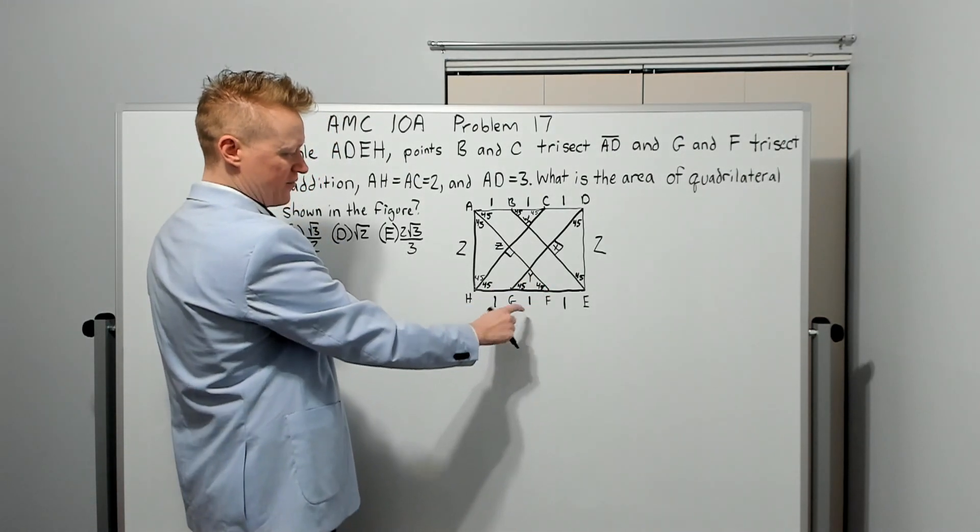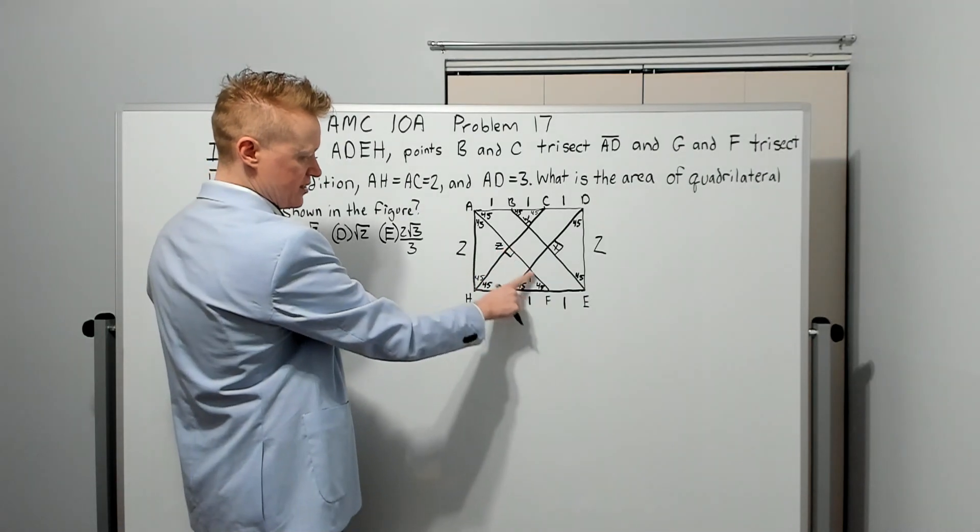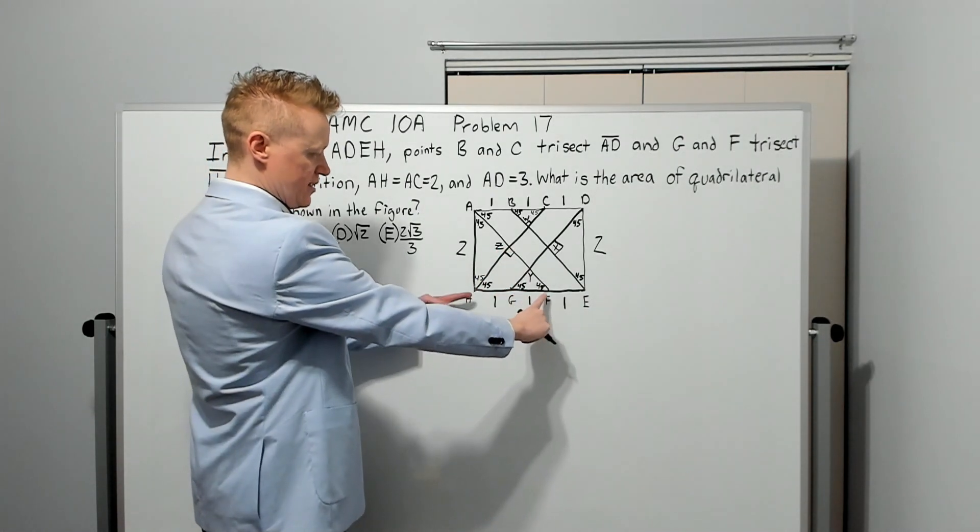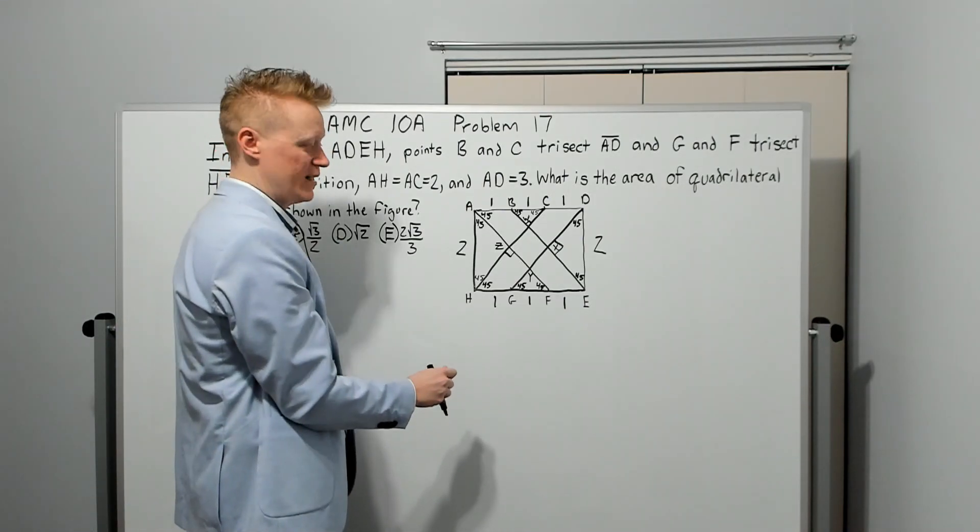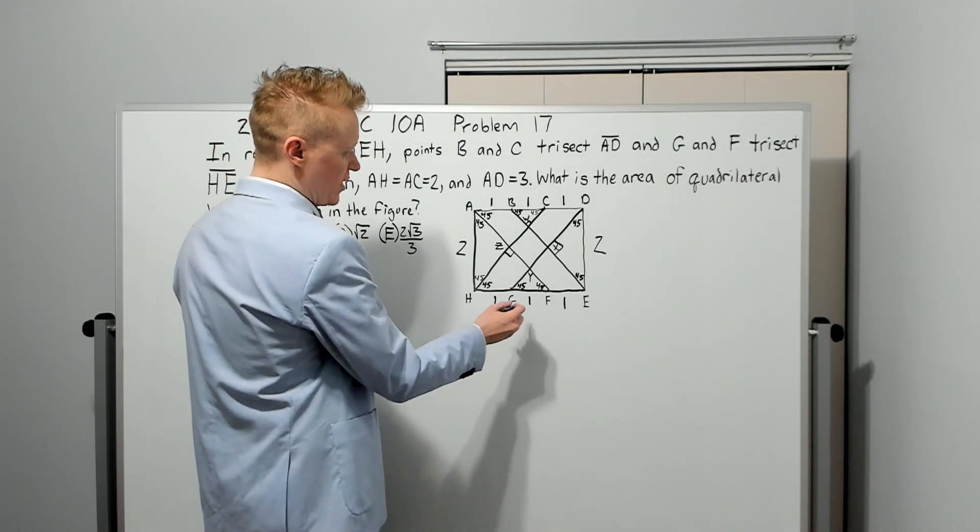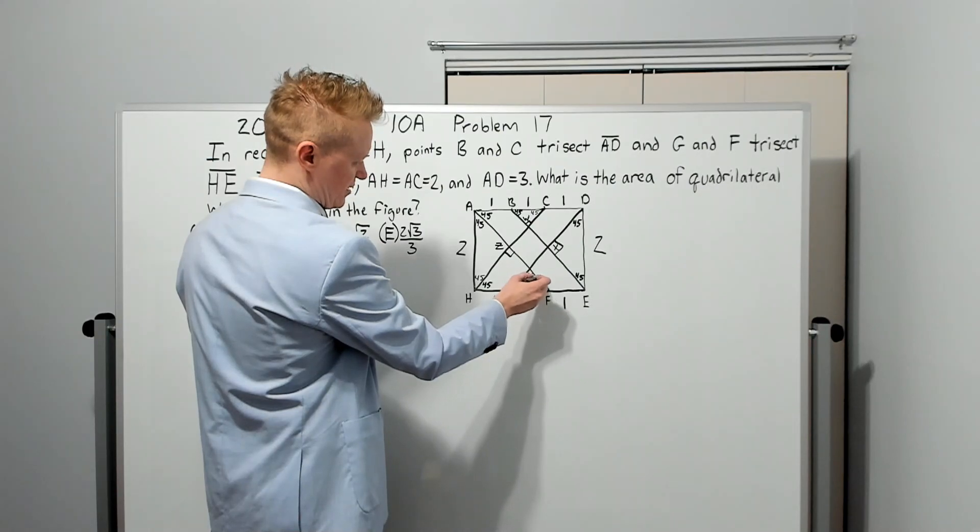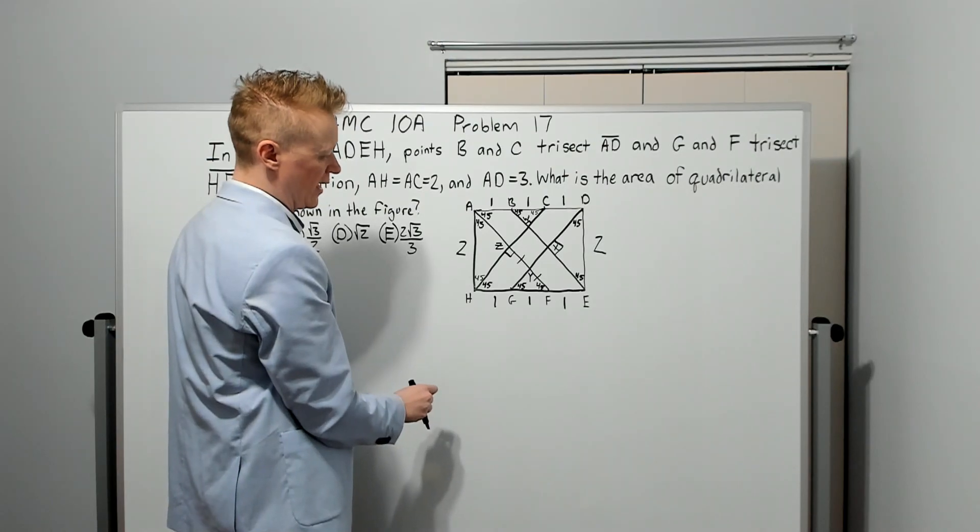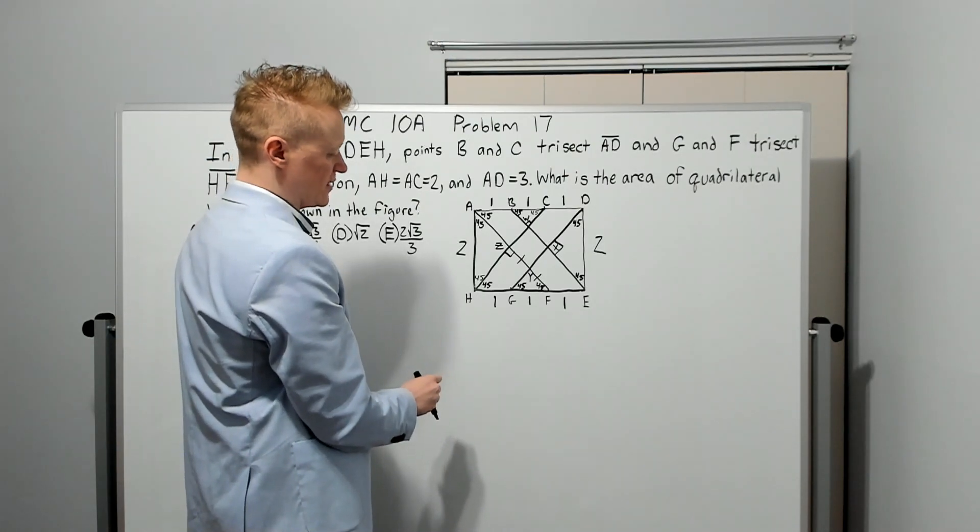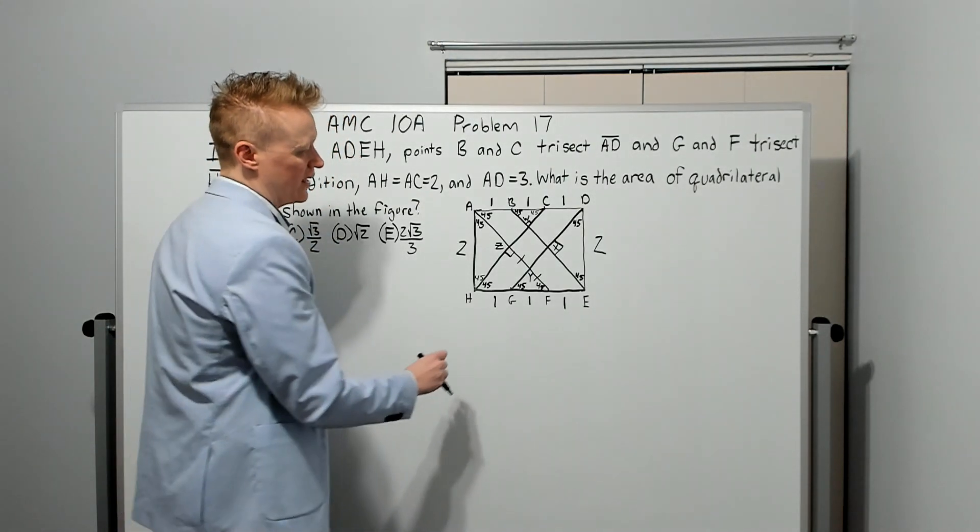Then what can we say? We know that this triangle here, GYF, is similar to HZF by a one-to-two ratio. That means all the lengths are in a one-to-two ratio. Then we would know that this here is going to be equal to this, so ZY equals YF. We could find out what ZY is in that way.